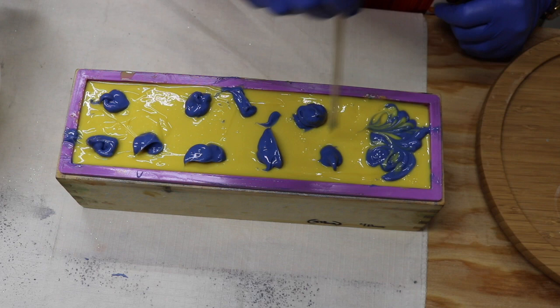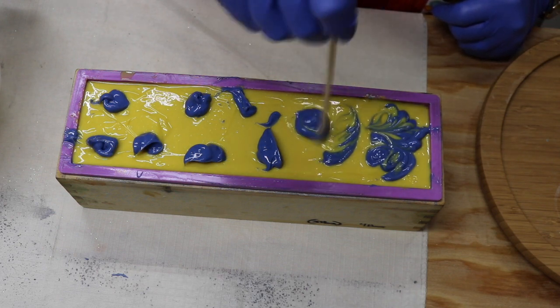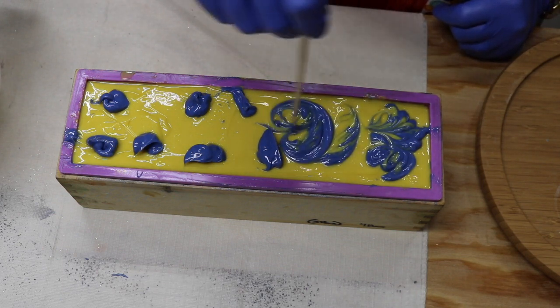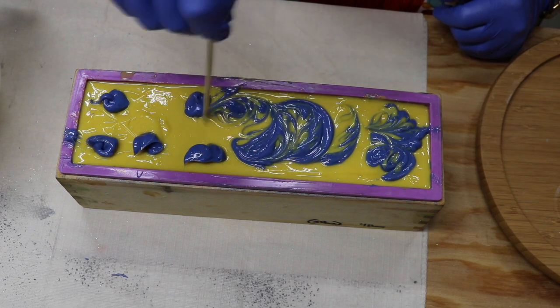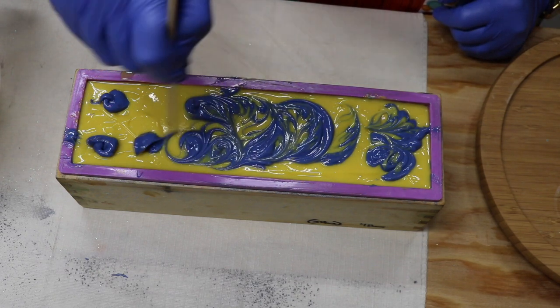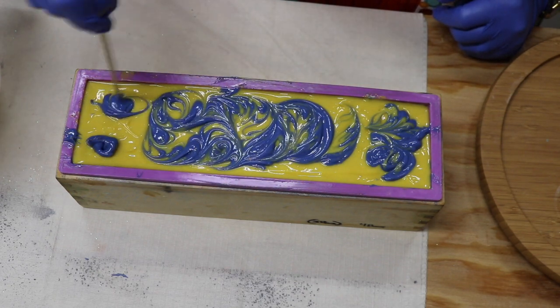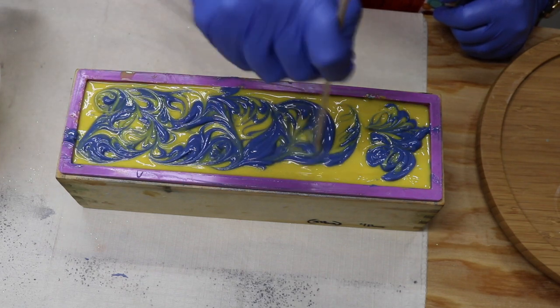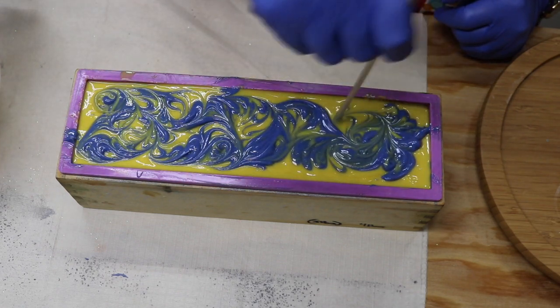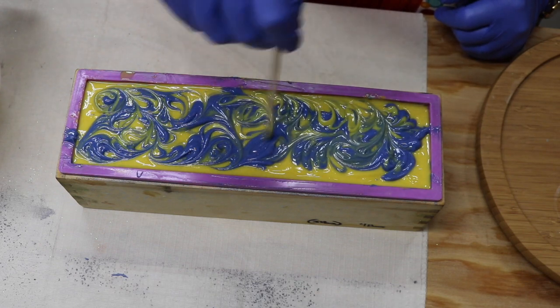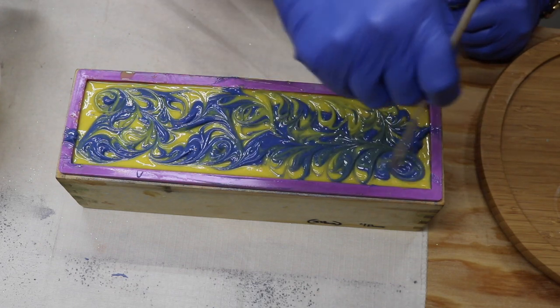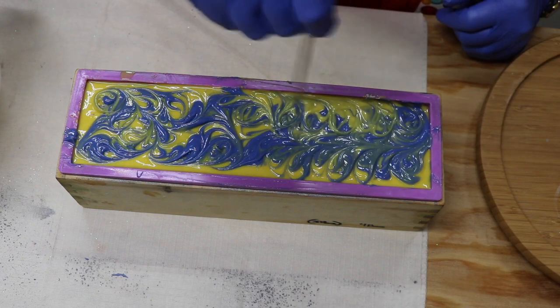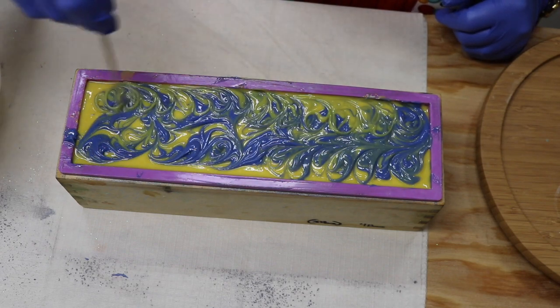There we go with this swirl, that's just a skewer stick for like shish kebabs that I don't use. I'm going in and just swirling and trying to pull some of the yellow into the blue and take the blue down into the yellow and vice versa and make something attractive to look at on top. It looks feathery to me, I think it's pretty.